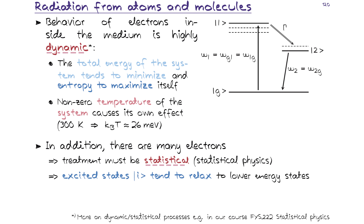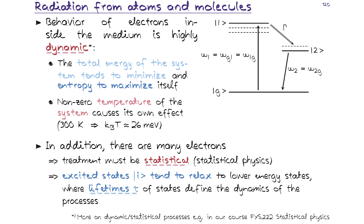Excited states tend to relax to lower energy states, based on the energy minimization principle. The lifetimes τ of these different states essentially dictate the dynamics of the processes. In normal atomic systems we are speaking of lifetimes on the order of tens of nanoseconds — that gives you an understanding of the time range of the dynamics for atomic emitters, fluorescent molecules, and quantum dots. So we're not speaking of femtosecond time scales but rather something of slower pace.